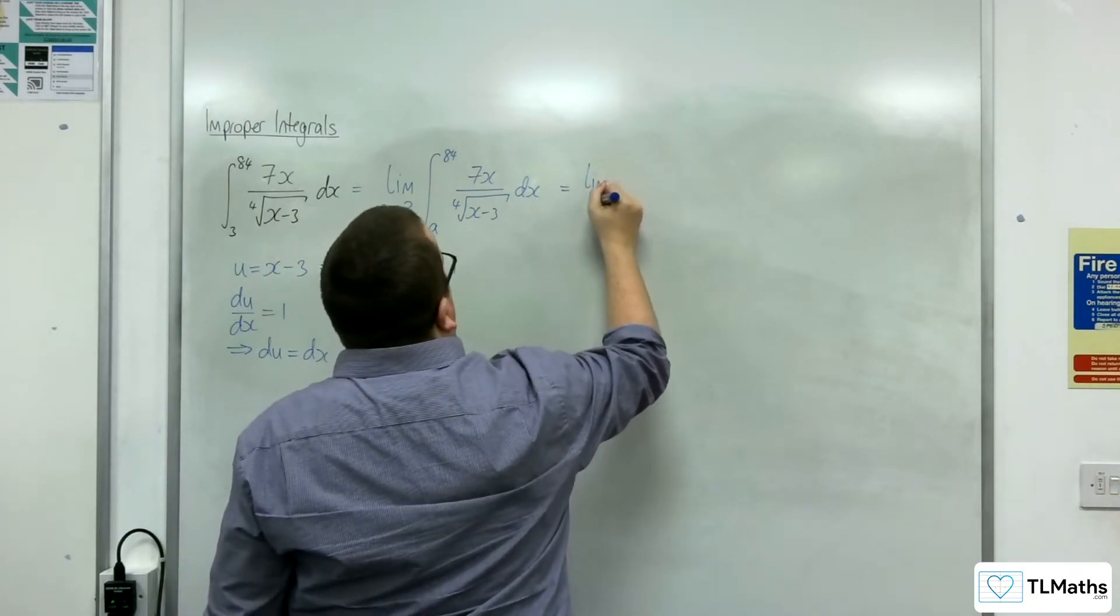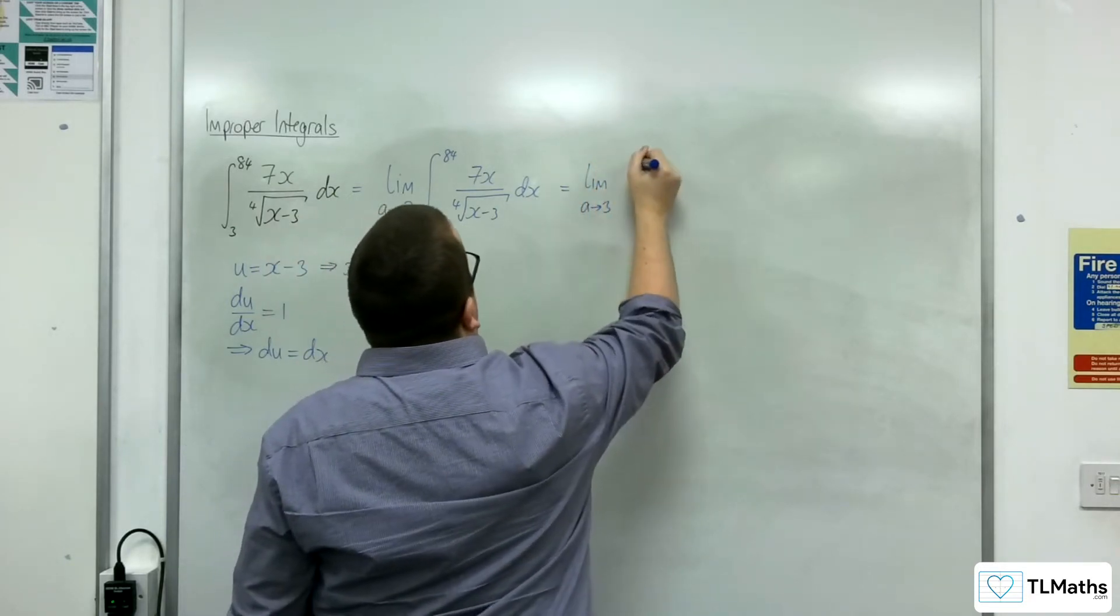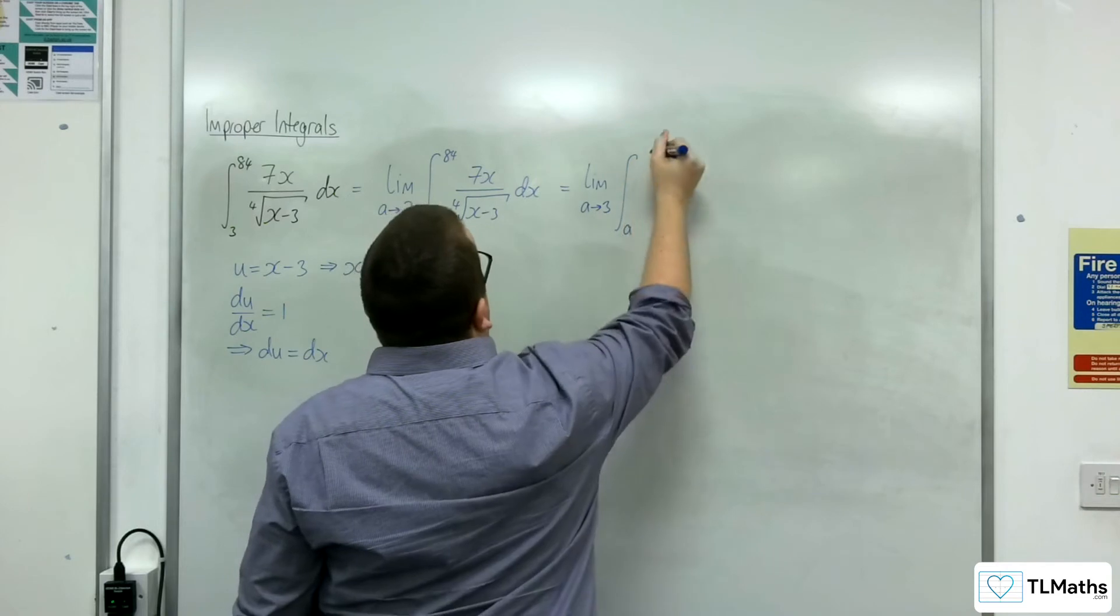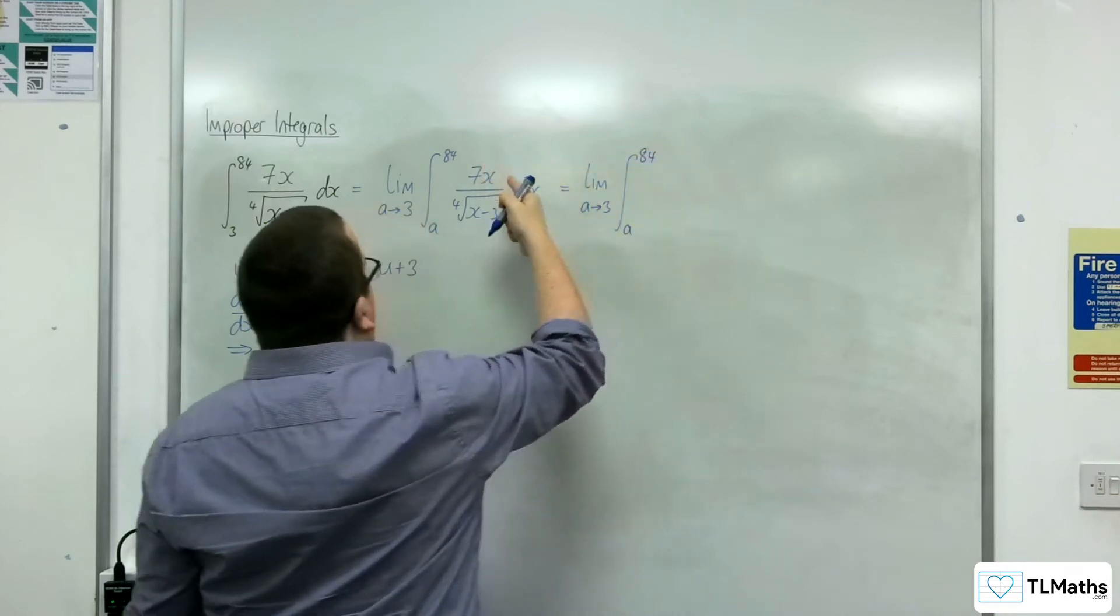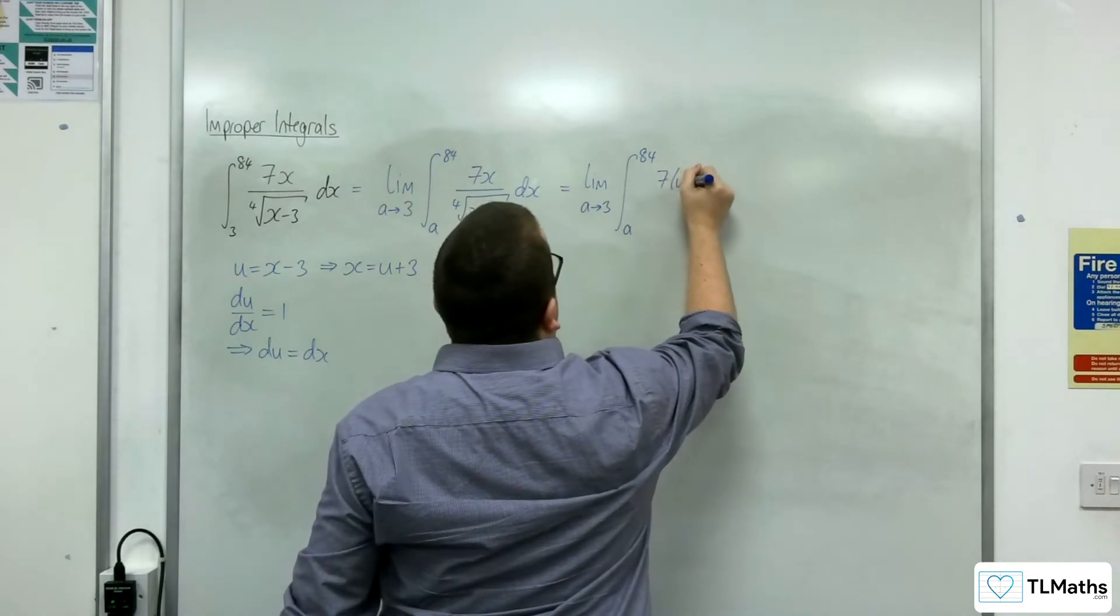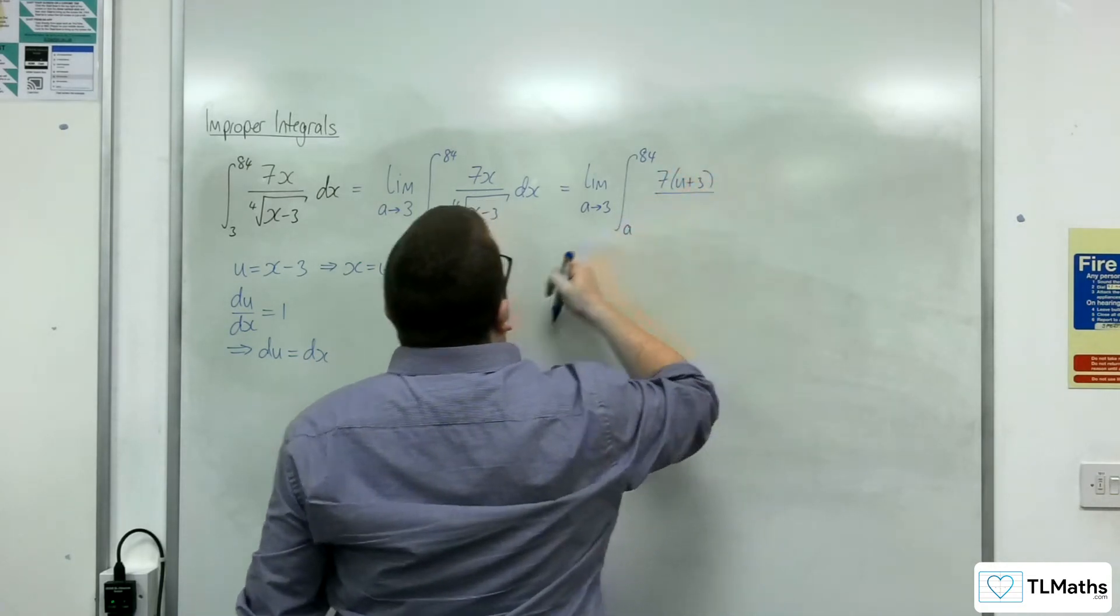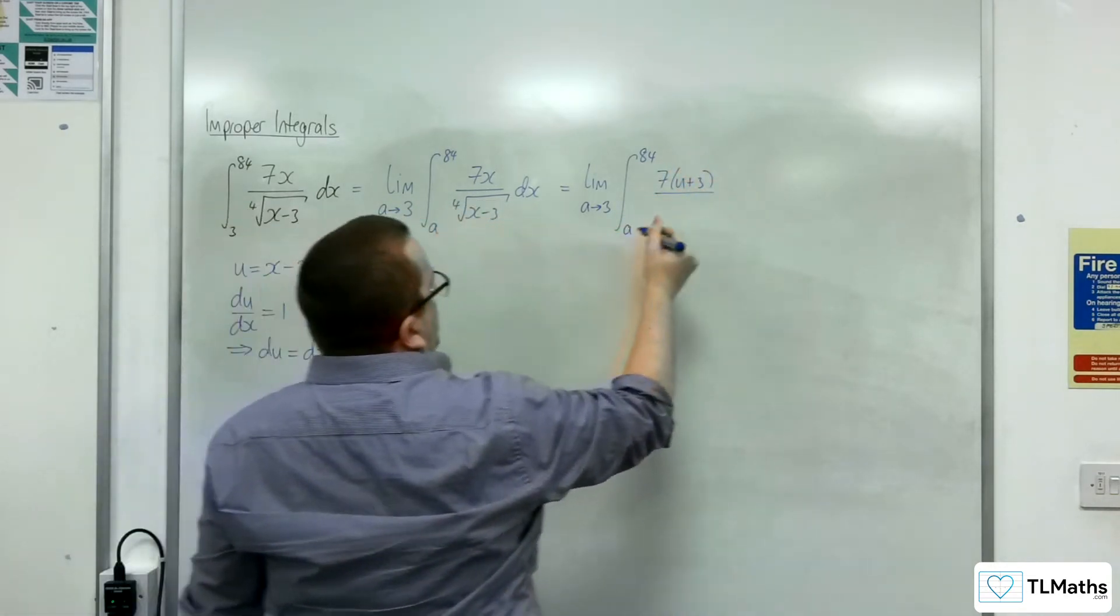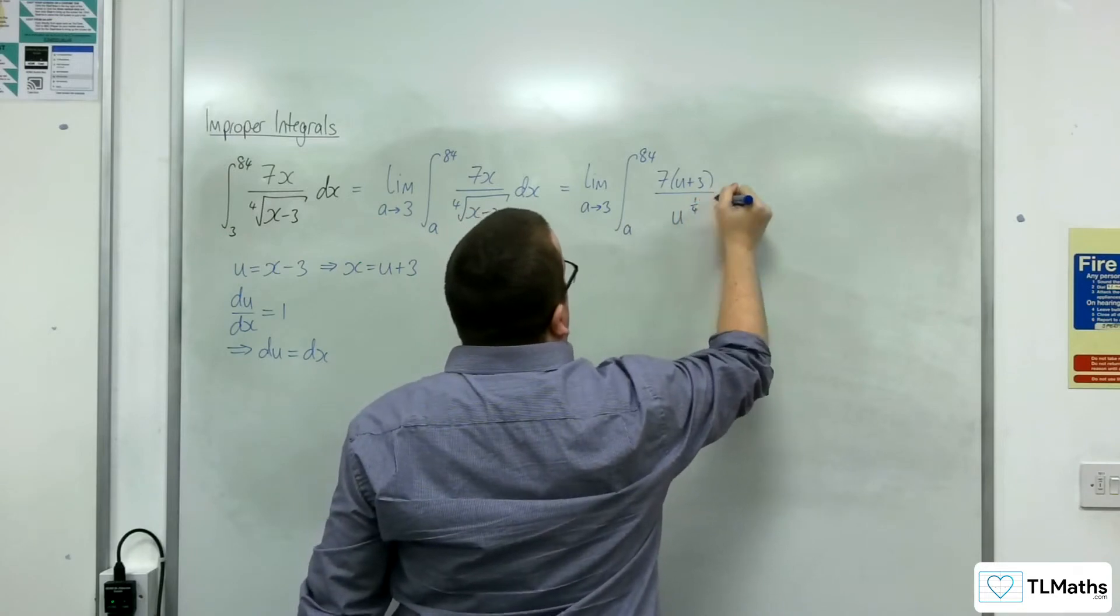So we've got the limit as a tends to 3 of the integral between a and 84 of 7 lots of x, so 7 lots of u plus 3, divided by u to the power of a quarter, and we've got du.